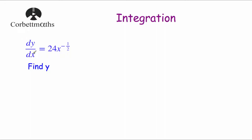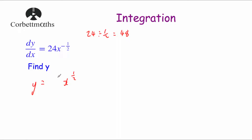Next question: dy by dx equals 24x to the power of negative a half. We increase the power of x by 1: at the minute it's minus a half, adding 1 gives 0.5, or a half. So x to the power of a half. Then 24 divided by a half equals 48, because there are 48 halves in 24 — remember we're not dividing by 2, we're dividing by a half. So y equals 48x to the power of a half plus c. Always make sure to put that plus c on the end.